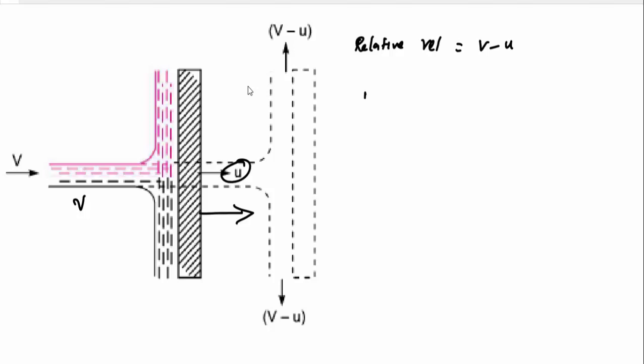From this, we can calculate the mass of jet striking per second, which is equal to rho A into (v minus u). In the plate, one particular velocity is the velocity of the plate, so we will use the value of v minus u throughout.